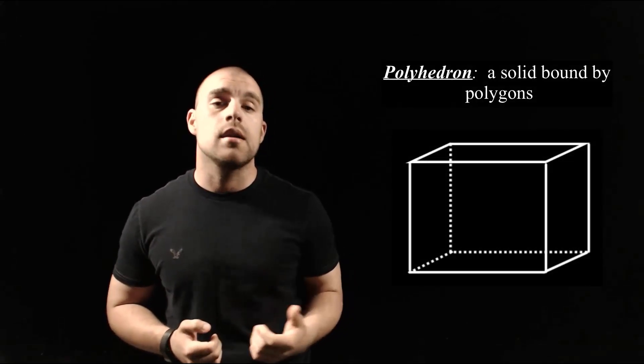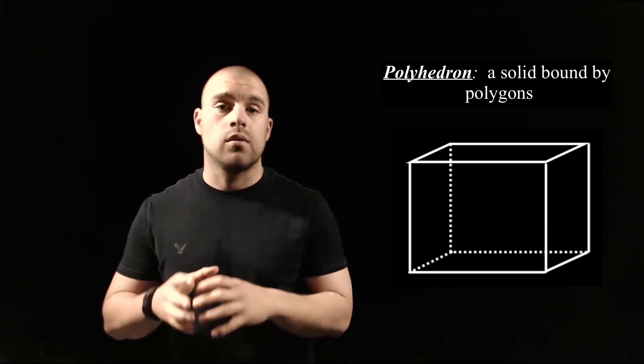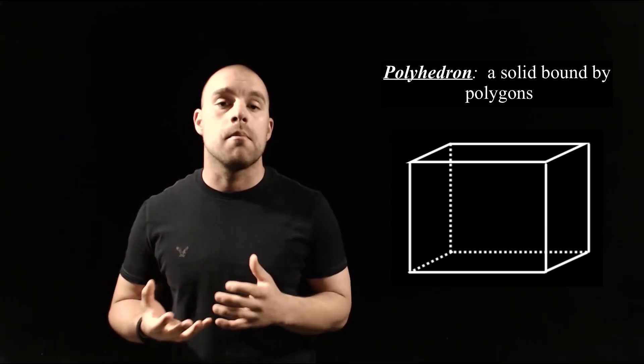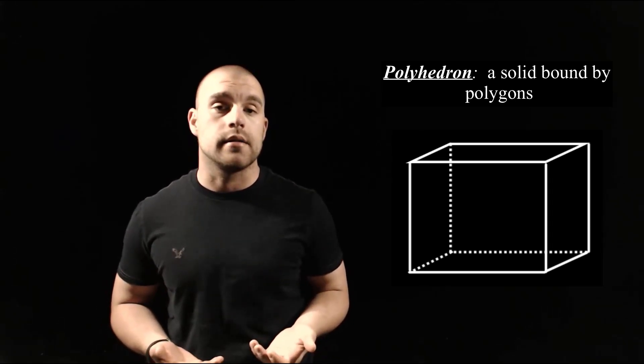A polyhedra is a three-dimensional solid that's bound or its sides are made up of different polygons. We're going to talk a little bit of vocab with these polyhedra first before we do anything else.